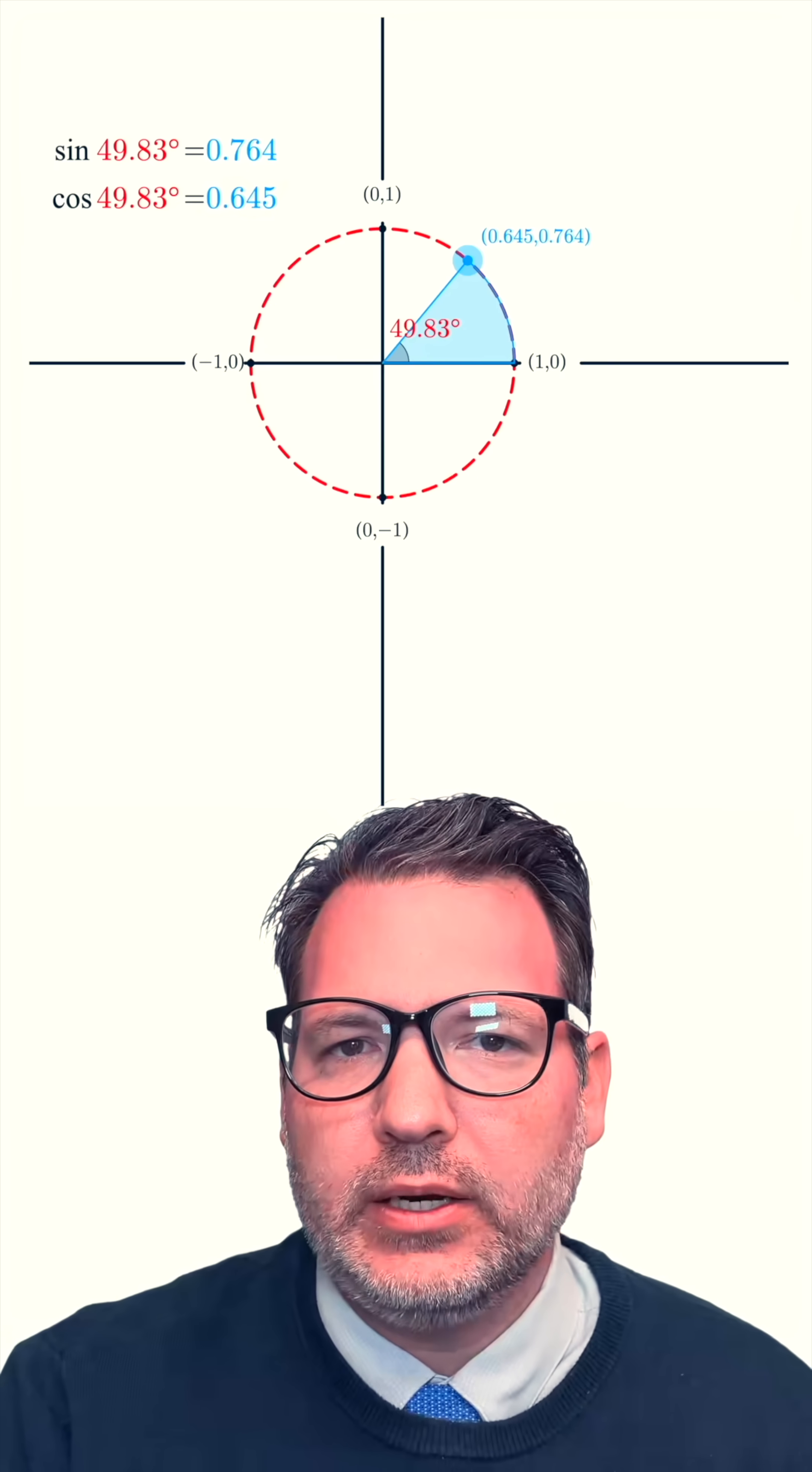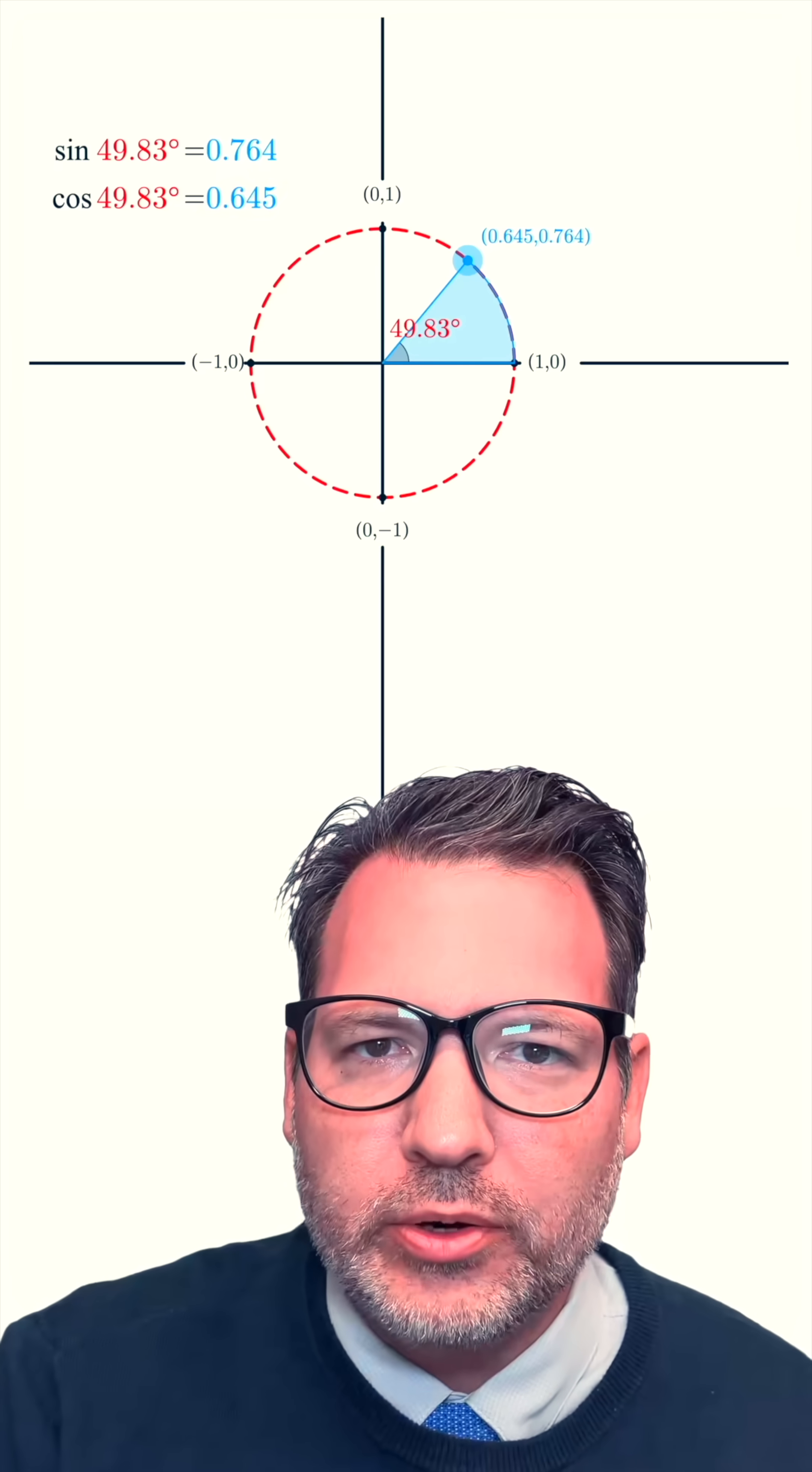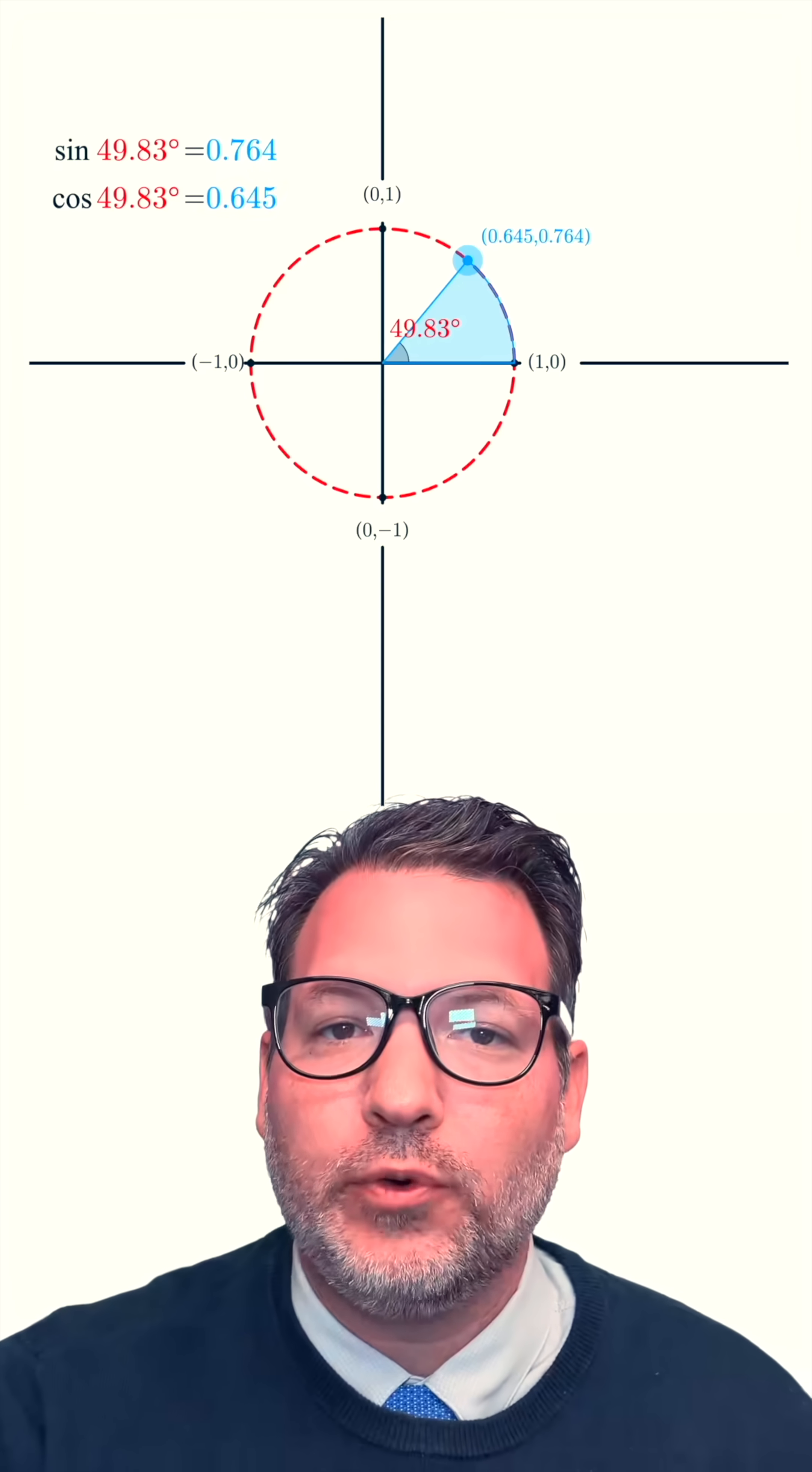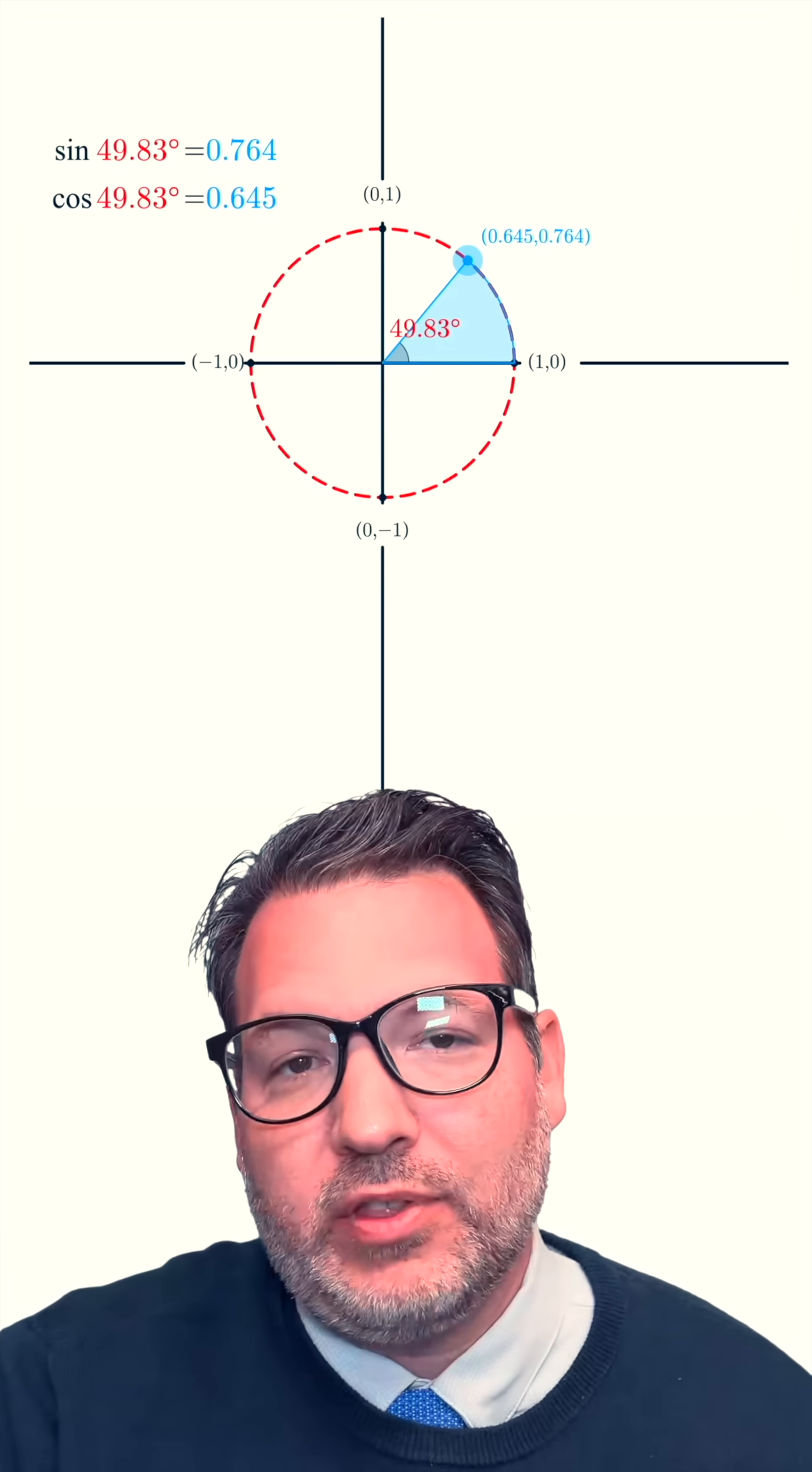Now, I want to bring up a little display for sine and cosine. We take the sine of that 49.83 degree angle or the cosine of that 49.83 degree angle, and we get whatever results we get. We just have the calculator tell us.